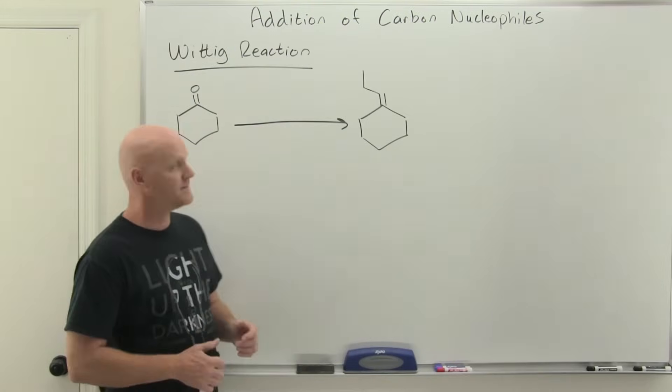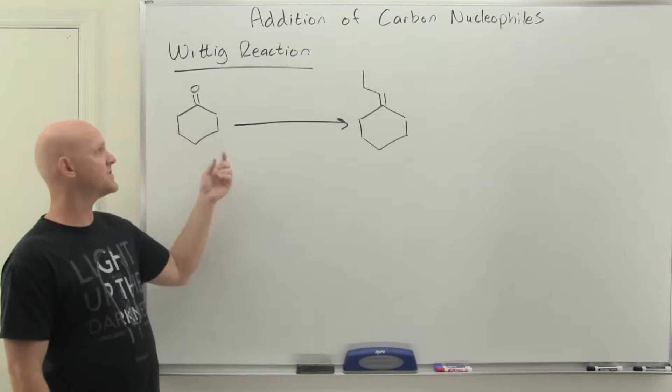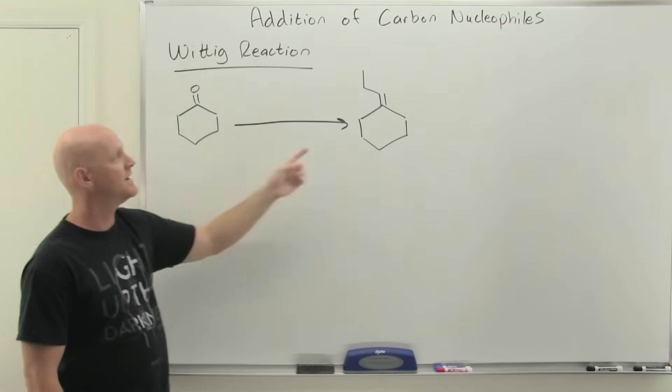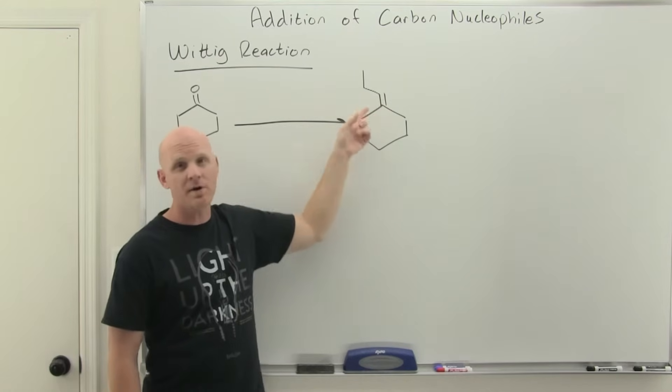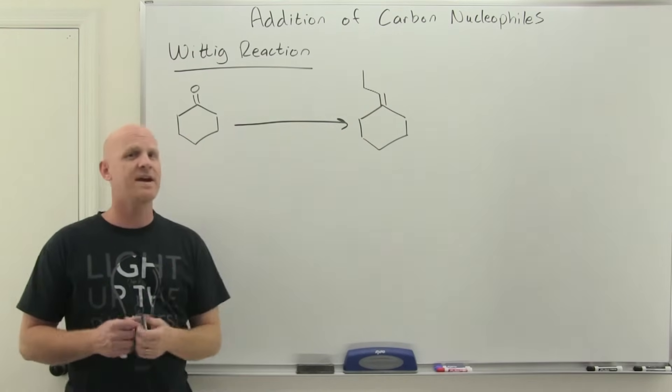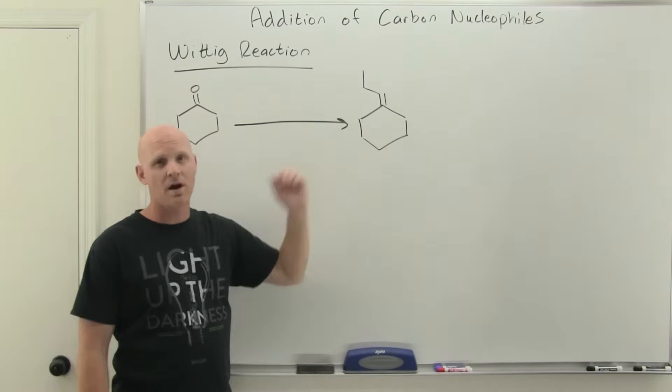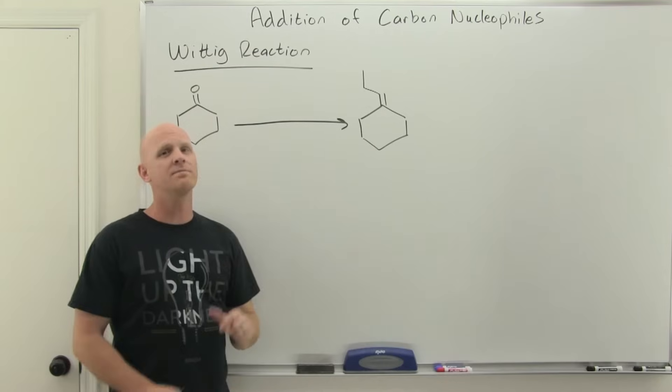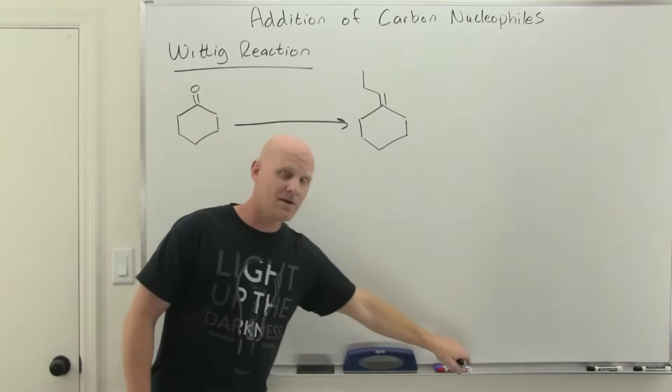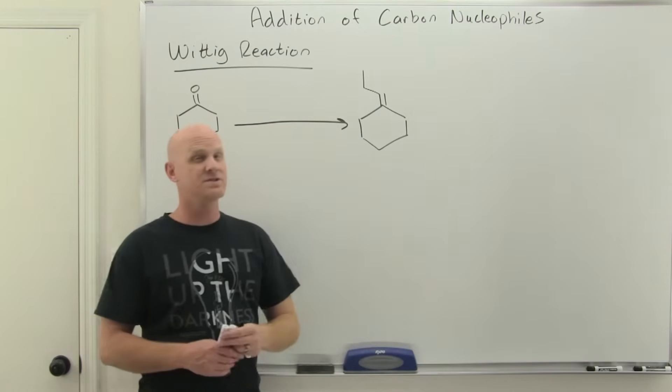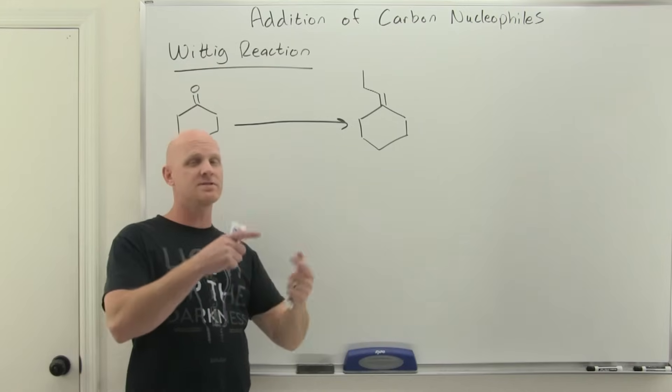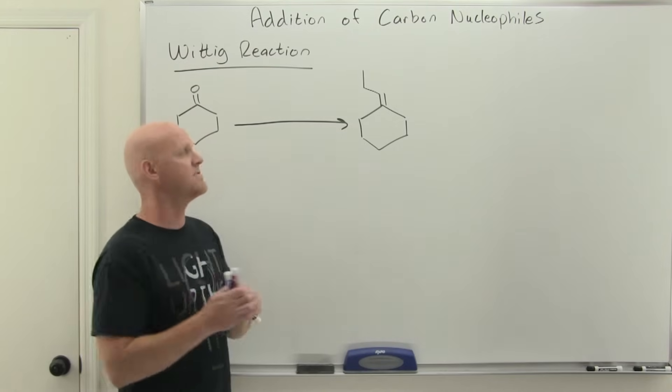Alright, so again, the net result of your Wittig reaction is it's going to turn a carbon-oxygen double bond into a carbon-carbon double bond. If you're looking at this from a synthesis perspective, that's kind of your big tell. If your carbon-oxygen bond turns into a carbon-carbon double bond, you are probably doing something with a Wittig reaction. Oftentimes you've got to look at these from a retrosynthesis perspective, and we're actually going to kind of do this a little backwards and start there.